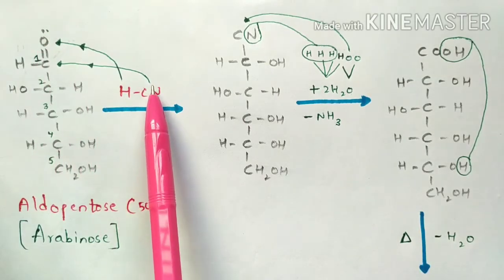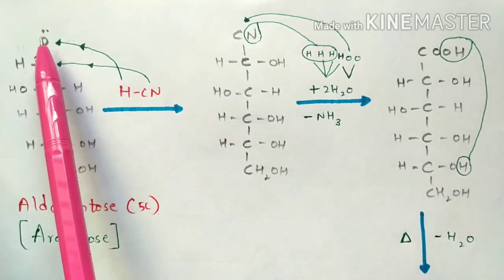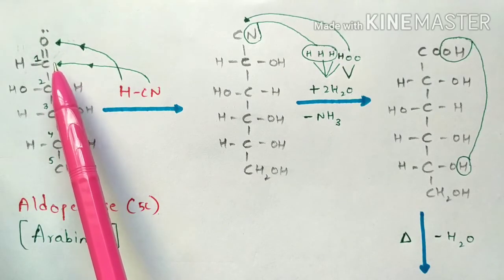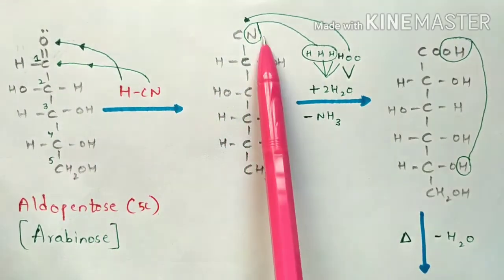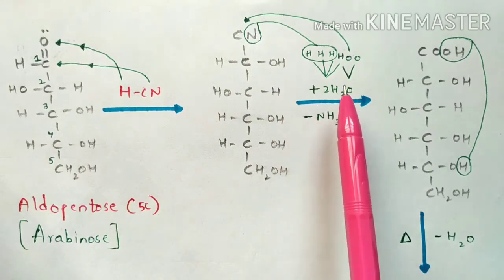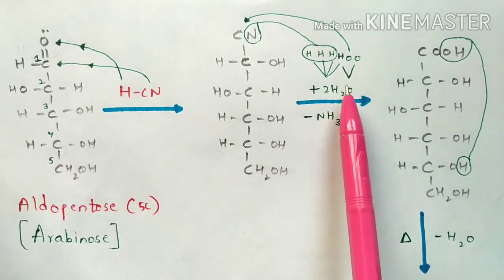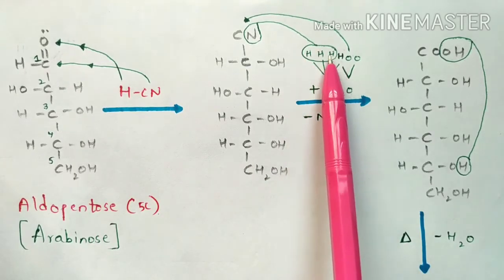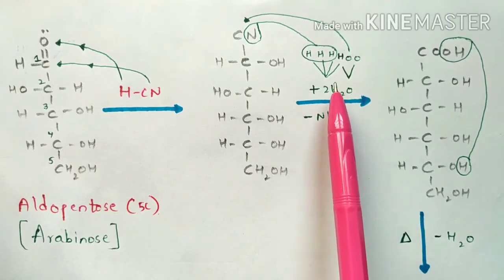The cyanide interacts with the carbon atom and the proton gets attached to the oxygen atom. The OH moves toward the first carbon and cyanide gets shifted to that carbon atom. The structure now has a cyanide group present. It is then treated with two moles of water — two moles of H₂O means four hydrogen atoms and two oxygen atoms total.